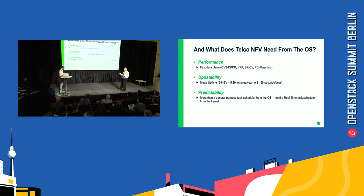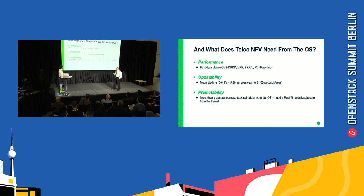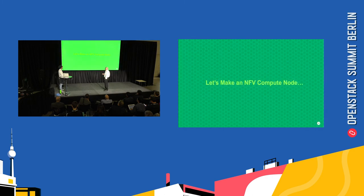We've covered the performance section — we've got a fast data plane running with four different technologies. I'll also mention VPP, which has a huge amount of activity going on, though we won't delve into it in this talk. If we do a part three at a future summit, we'll go deeper into VPP because it's a very exciting area right now. On updateability: telcos require what I call mega uptime — minimum five to six nines. Their networks include a lot of mode-one systems, and when your cell phone doesn't work, customers get very unhappy. Telcos lose business. On predictability: we need more than a general-purpose task scheduler. When processing protocols in a network world, you have to be on a very defined, repeatable basis — otherwise you get VoIP chatter where the line breaks up or video stops playing. So, let's make an NFV compute node.